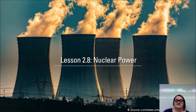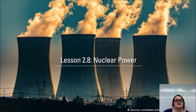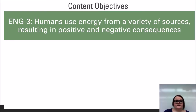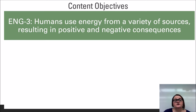Hi everybody and welcome to lesson 2.8, nuclear power. The content in this video is aligned to the third edition of Environmental Science for AP and covers information from College Board Unit 6.6. We're continuing our deeper dive into the variety of energy generation resources and processes, discussing nuclear power. This leads us to the content objective of understanding that humans use energy from a variety of sources resulting in positive and negative consequences.